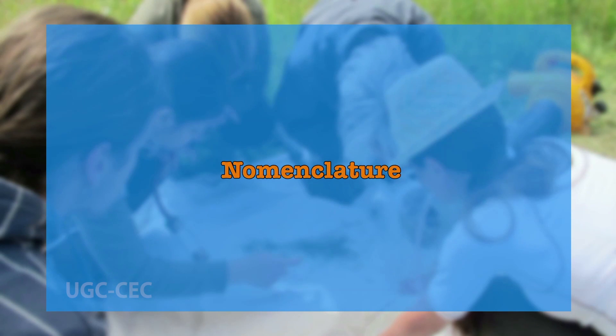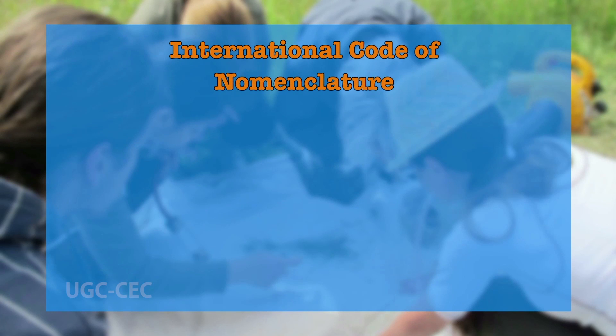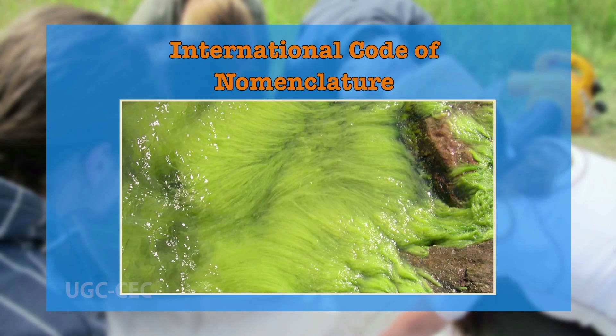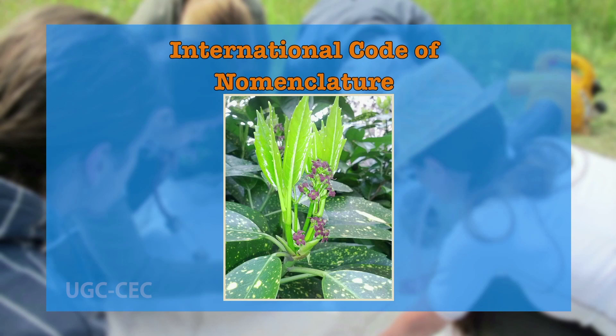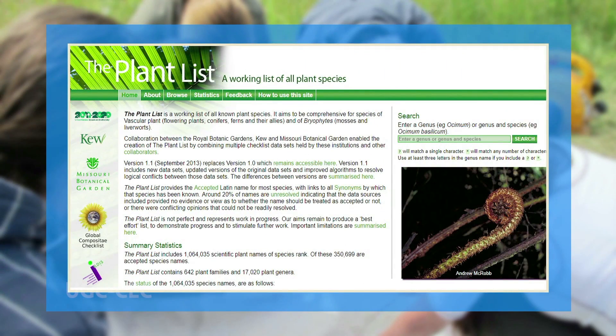Nomenclature — nomenclature deals with the determination of the correct name for a taxon. The nomenclature of plants is governed by the International Code of Nomenclature for algae, fungi, and plants through its rules and recommendations. The online database Plant List will be used for verifying the spelling and correct author citation of all the plant species documented.